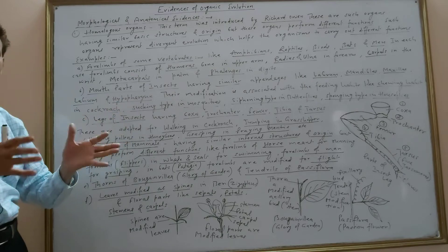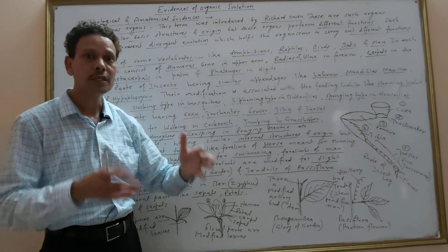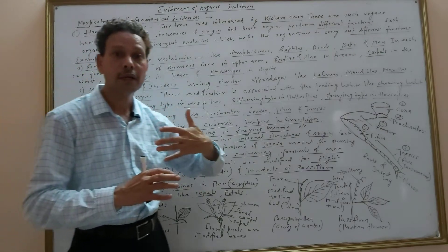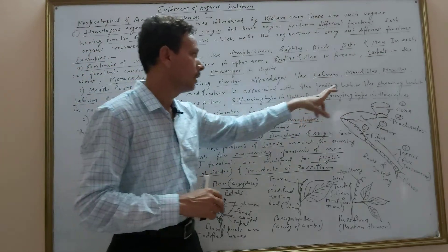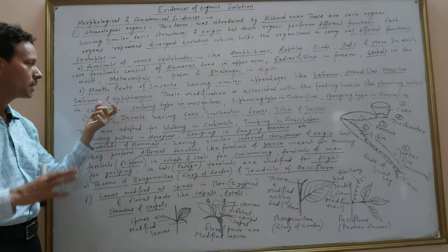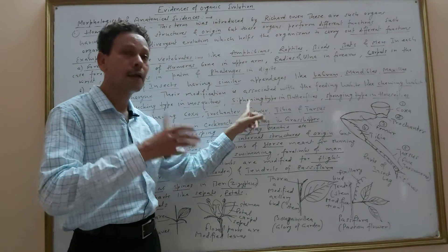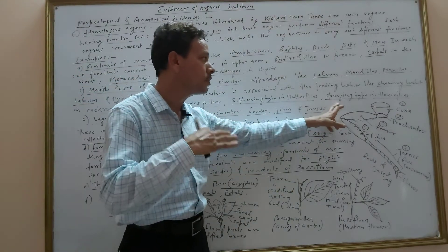Their modifications are associated with different feeding habits like chewing habit in case of cockroach, sucking type of mouth parts in mosquitoes, siphoning type of mouth parts in butterflies, and sponging type in case of houseflies.